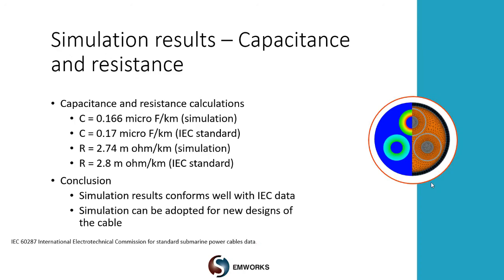For one such simulation, let's look at the comparison of capacitance and resistance. The capacitance calculation from simulation confirms very well with the IEC standard. The same goes for resistance — the degree of error is less than half a percent in these computations. We can conclude with confidence that simulation can be adopted for finding out the capacitance and resistance of these cable designs, allowing finite element analysis to compute performance for new cable designs.